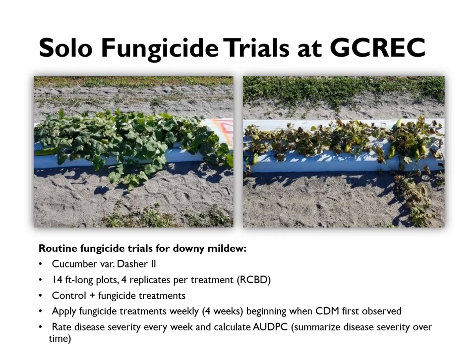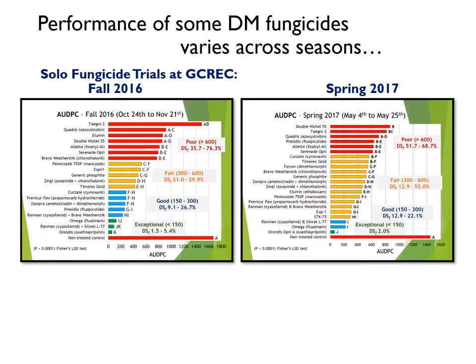Like most programs, we have monitored the performance of downy mildew fungicides over the years on cucumber. My current program uses the variety Dasher 2 and monitors disease severity weekly after making solo fungicide applications. We summarize disease severity over time as the area under the disease progress curve. Here are two field trials that represent some trends we've observed over the years. At the bottom of each figure is the non-treated control. The fungicide treatments are sorted from top down, from least to most effective, and are color coded on performance with the range of AUDPC values and final disease severity for each group.